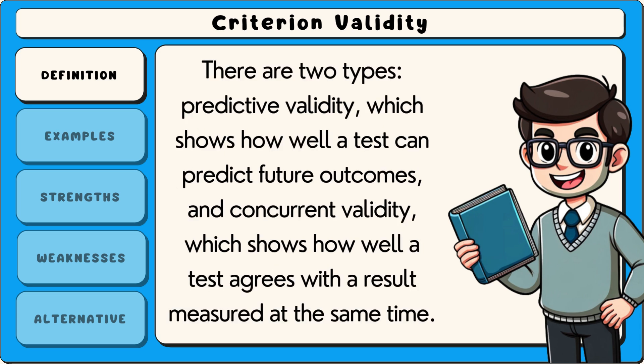There are two types: predictive validity, which shows how well a test can predict future outcomes, and concurrent validity, which shows how well a test agrees with a result measured at the same time.